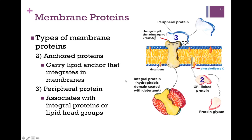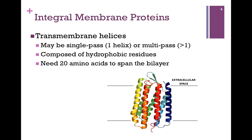Or it might associate with a lipid head group. As we go through the semester, we'll find examples of all three of these types of membrane proteins. Let's look more particularly at those integral membrane proteins. As they pass through that hydrophobic environment, there are two main ways in which they accommodate that environment, relating to the two main types of patterned secondary structure from Chapter 4: alpha helix and beta sheets.